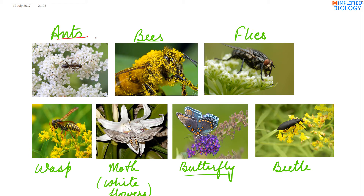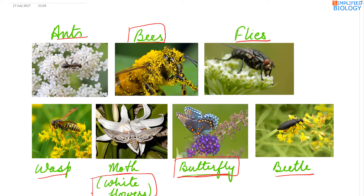Insects that cause pollination include ants, bees, flies, wasps, moths, butterflies, and beetles. Bees and butterflies are the most common pollinators, while moths usually pollinate white flowers. If the flowers are very small in size, they grow in bunches that appear bigger.